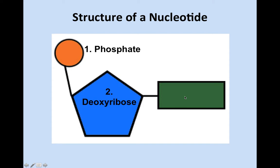Number three is the nitrogen base — put a number three in the rectangle. To show our elements: the phosphate has CHO and P, and the nitrogen base is where our N comes in.